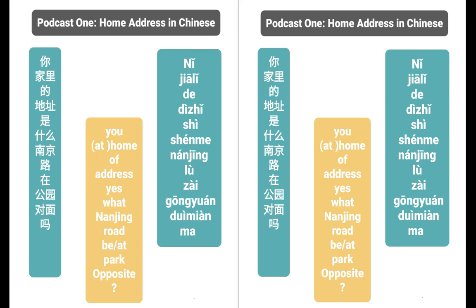Could we look at those two characters? 地址. 地 is fourth tone, 址 is third tone. 地 means 'the earth' or 'ground.' 址 means 'position' or 'location.' So it's a really literal translation — the spot on earth is your address. 地址 — what is your earth spot? Interesting.